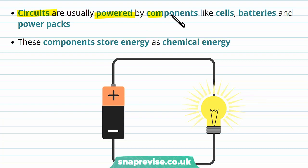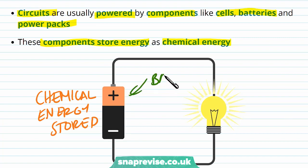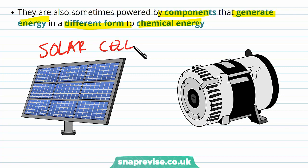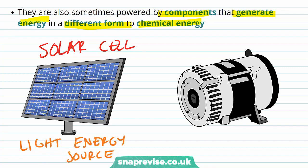Circuits are usually powered by components like cells, batteries, and power packs. These components store energy as chemical energy — so for example this battery here stores some chemical energy. They are also sometimes powered by components that generate energy in a different form, such as a solar cell which uses light energy as its energy source, or a dynamo which uses kinetic energy as its energy source.